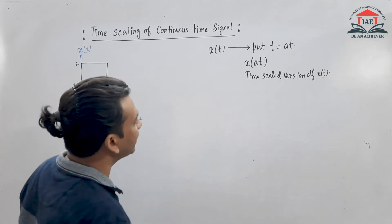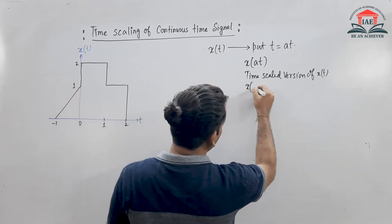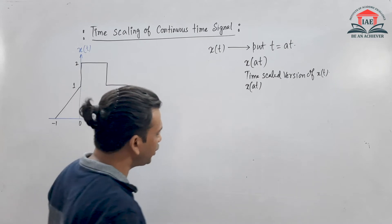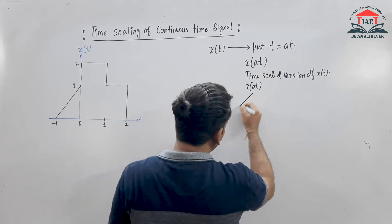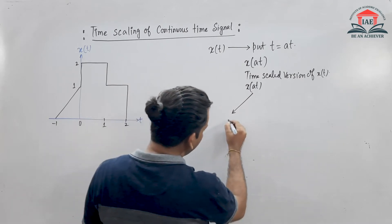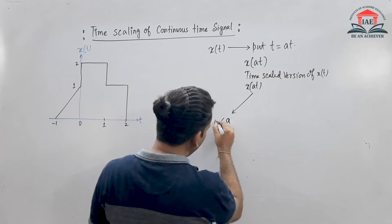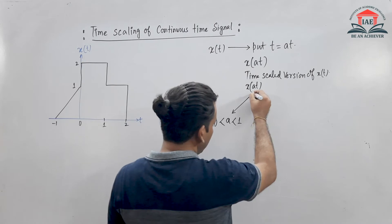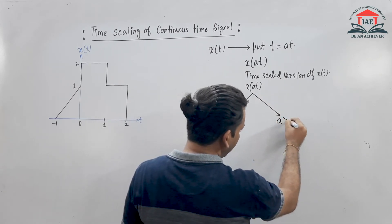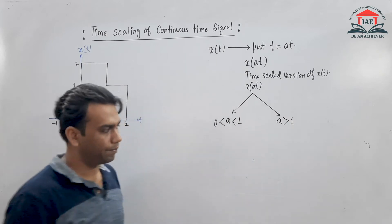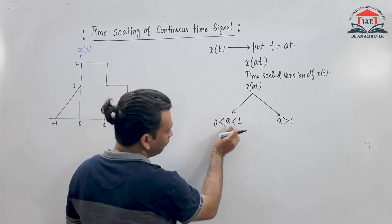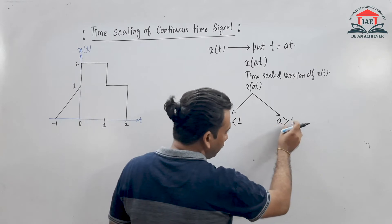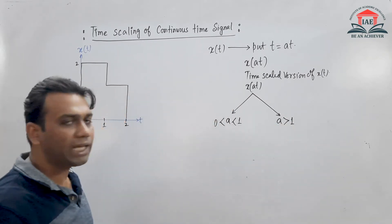So this is the time-scaling parameter. 'A' is the time-scaling parameter. The value of 'a' can be greater than 0 and less than 1, or the value of 'a' can be greater than 1 — these two cases are possible.